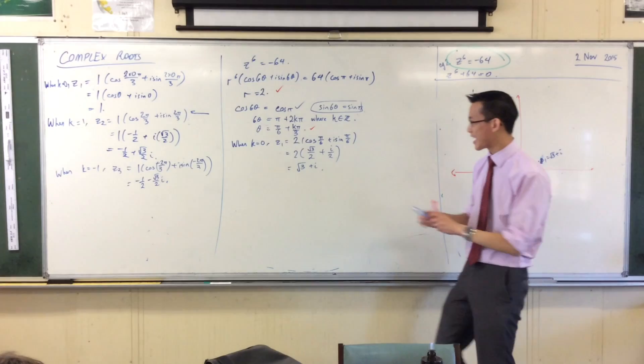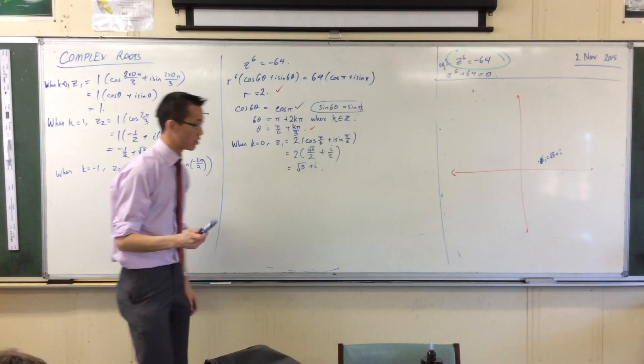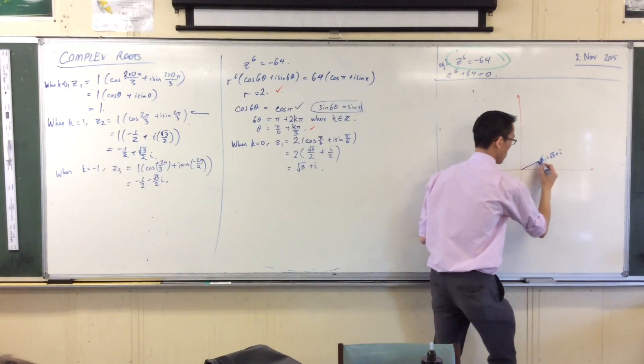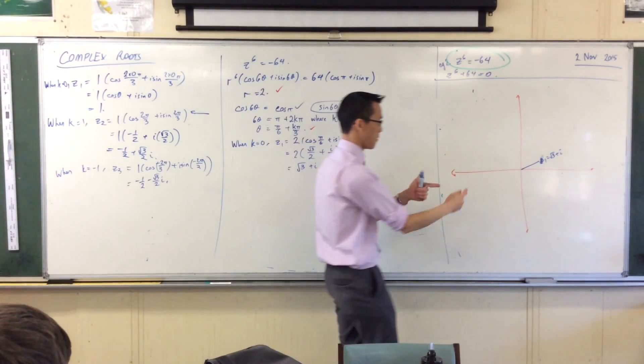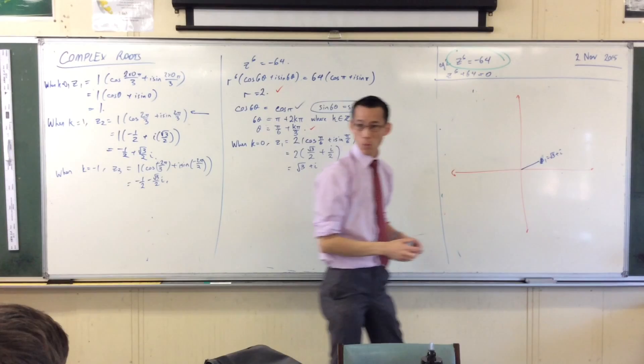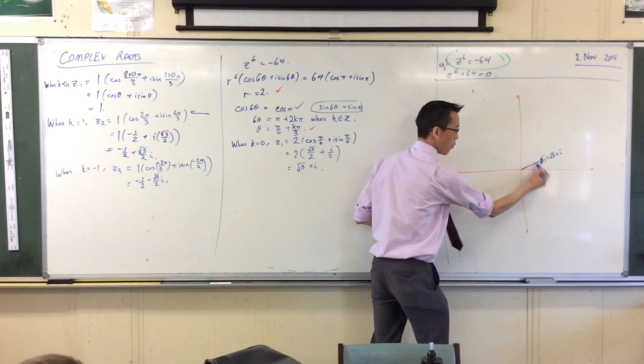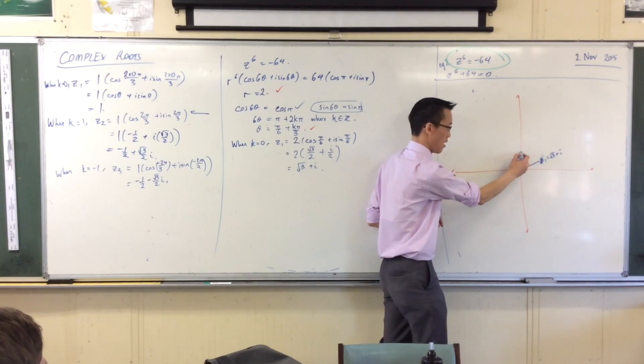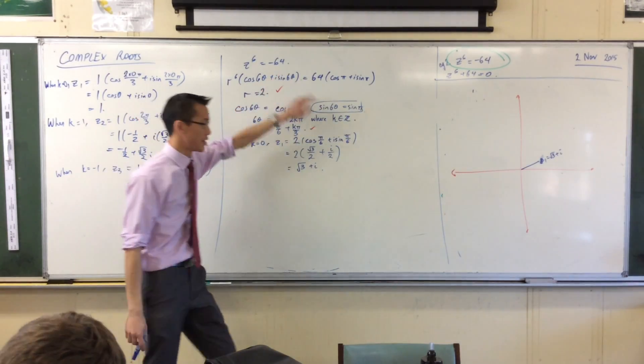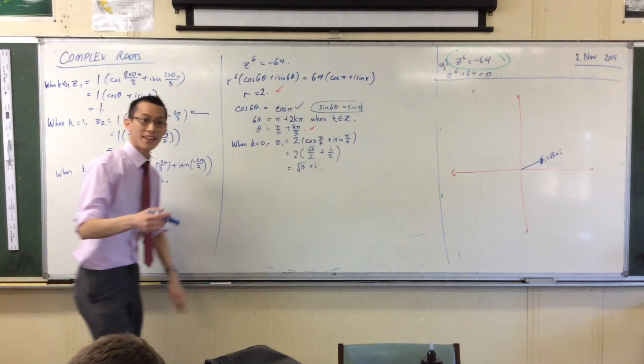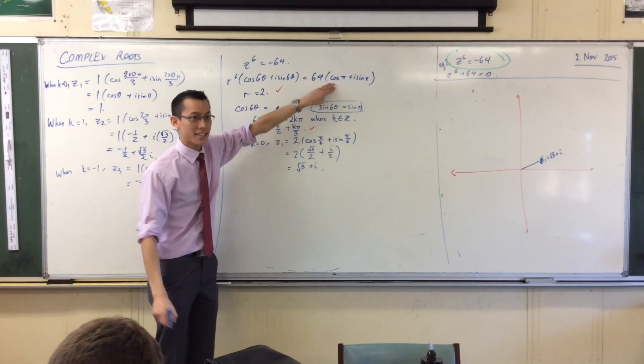So where is root 3 plus i? Root 3 plus i is going to be somewhere about there. That's z1. Now think about what happens when I take this guy and I raise him to the power of 6. Firstly let's think about the moduli. The modulus at the moment is 2. So when I do it 6 times it'll go 2, 4, 8, 16, 32, 64. That'll take me out really far. What about the angle? It'll be pi on 6 and I just keep adding it. So I go 1, 2, 3 will get me to pi on 2, 4, 5, 6 gets me onto the negative real axis, which is where I better be. That's where minus 64 is, just a lot further away.